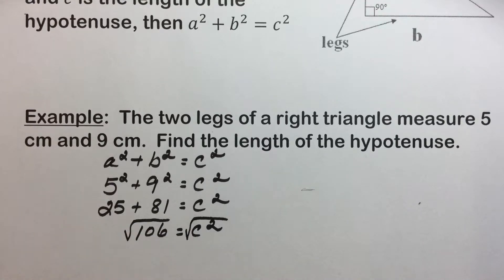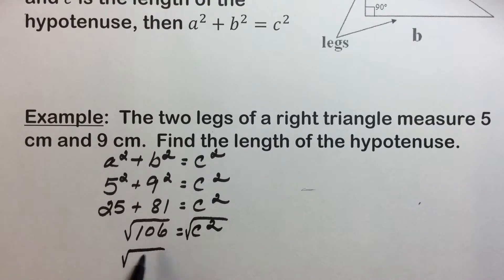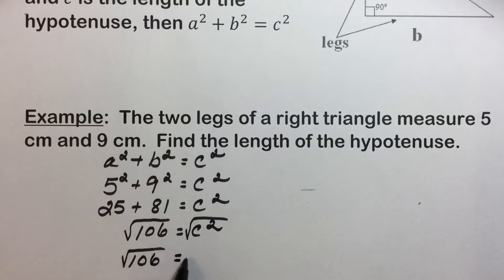Taking the square root of each side, we have an exact answer of the square root of 106 for our hypotenuse in this particular right triangle.